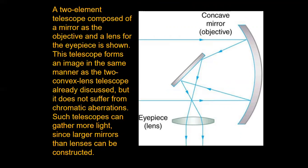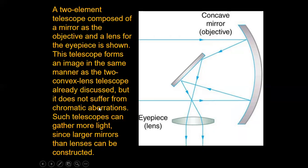These two-element telescopes are composed of a mirror as the objective and a lens for the eyepiece — a combination of both mirrors and lenses. In Newtonian and coudé focus designs, an eyepiece lens helps with viewing, but the primary focusing of light happens from the mirrors. These telescopes form an image in the same manner as two convex lens telescopes, but most importantly, they do not suffer from chromatic aberration the way lenses do. That is the advantage of using mirrors.